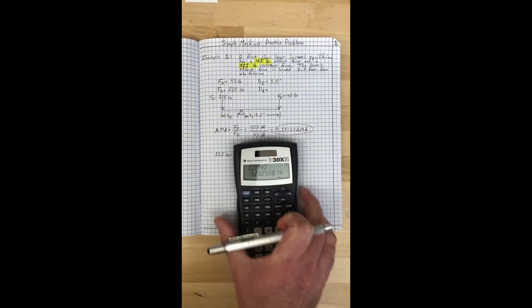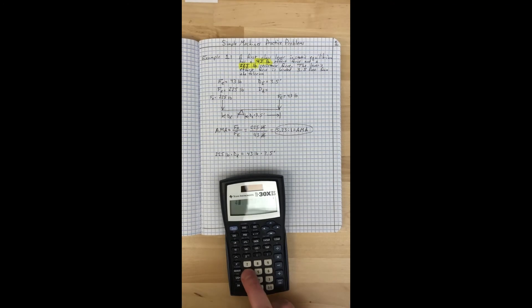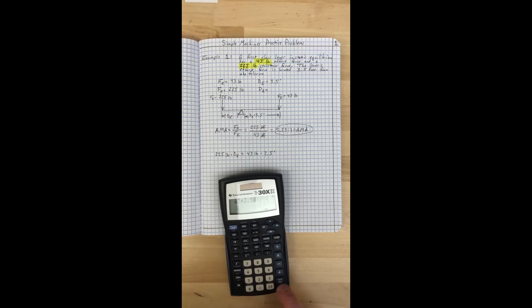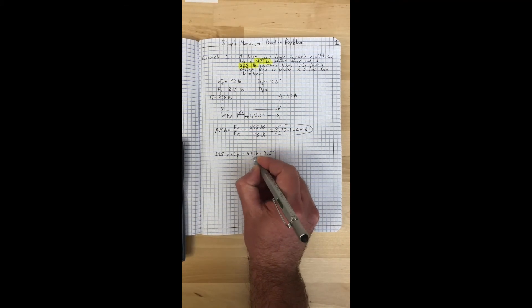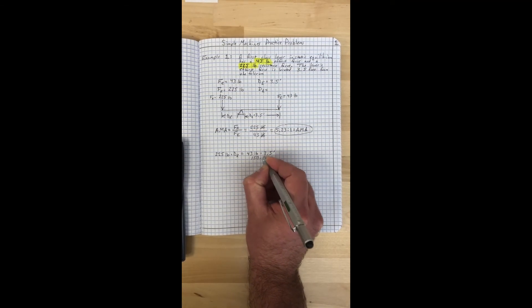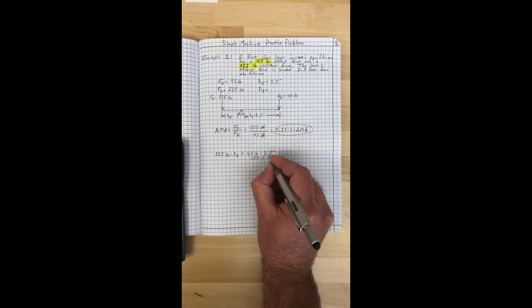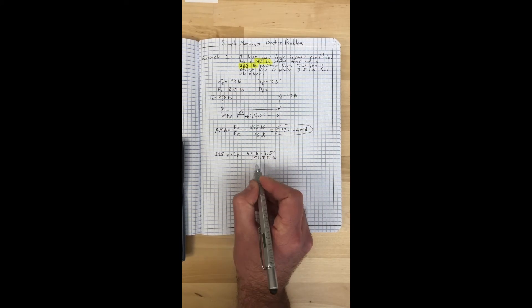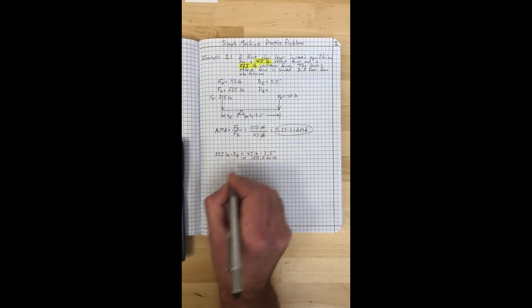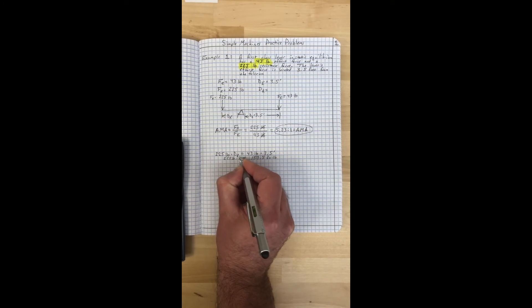Now we're going to simplify a little bit. We'll put 43 pounds times three and a half feet and we get 150.5, and the units that we're now dealing with are foot pounds. So 150 foot pounds equals 225 pounds times Dr.